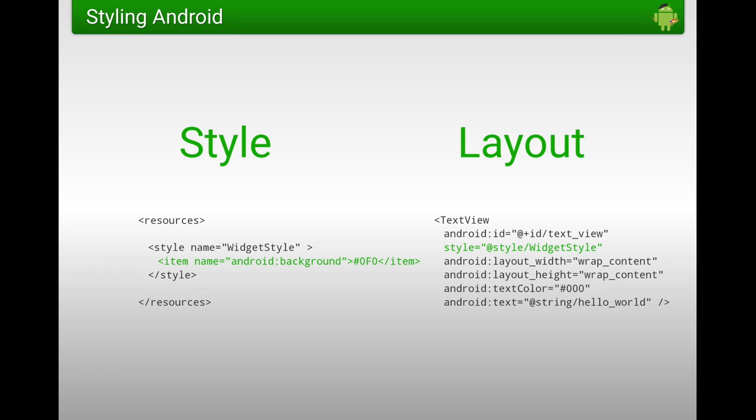So which of these other attributes could we actually move into the style? Let's start at the top — the ID. Absolutely not. This is the identity of the widget within the layout. If you have multiple widgets with the same ID, you're going to have problems. If you're using ConstraintLayout, you'll actually get errors because it cannot handle multiple views with the same ID in the same view hierarchy. So this is definitely part of the layout.